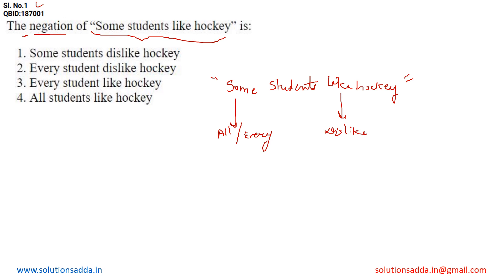Let's check the options. Option one, 'some students dislike hockey' — that is incorrect. Option two, 'every student dislike hockey' — yes, that is correct. So the correct option for this question is option number two.